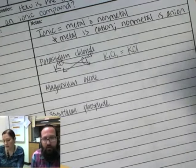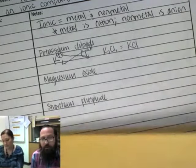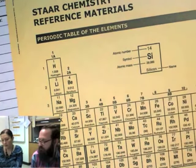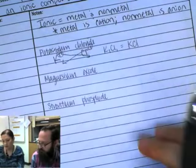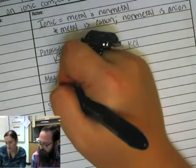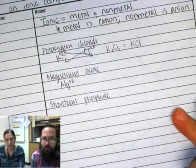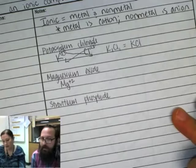But if there's a number besides one, I need to have it? Yes. So let's try the next one. Magnesium. Magnesium is Mg. So it's a plus two because it's in the second column, so it lost two electrons.